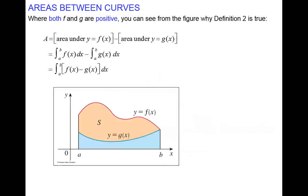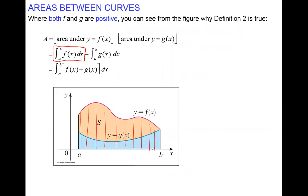We can also look at this from the area's perspective to confirm this definition works. Taking the area under f(x) — the definite integral of f(x) dx from a to b — and subtracting the definite integral from a to b of g(x) dx, which is the area under g(x) above the x-axis. That subtraction gives the area of region S, which is our integral.